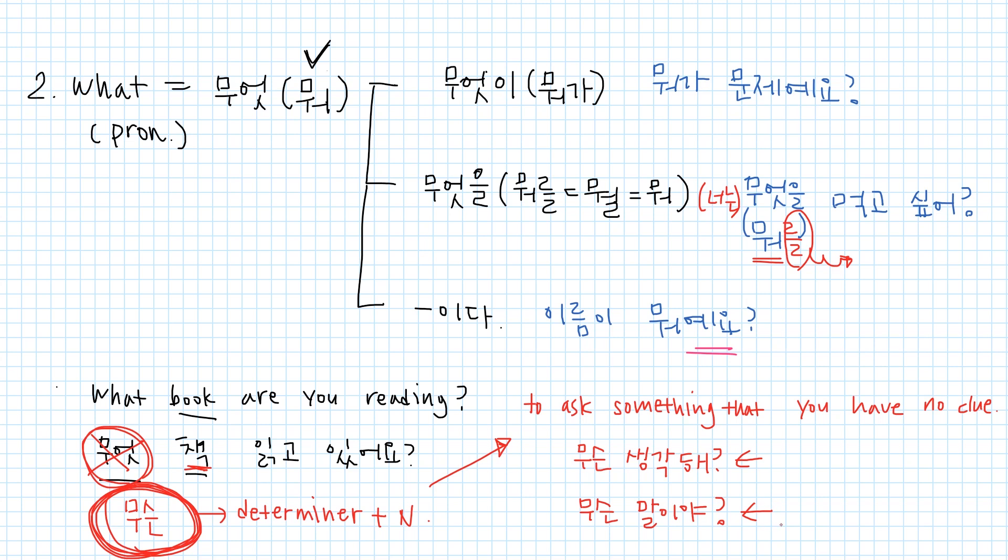The third question word, when. In Korean, 언제. In English, when is just an adverb, but in Korean, it is a pronoun and also an adverb. As it's a pronoun, several particles can be attached, for example, 가, or 부터, or 까지, and also 이다 can be attached.